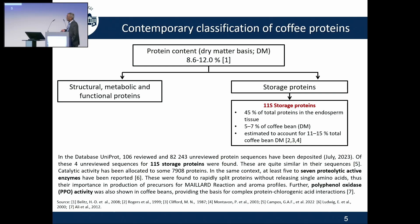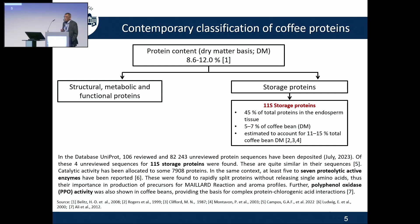If I looked up the Uniprot database, I find 82,000 proteins coming from coffee, and four amino acid sequences for the 11S storage protein. We tried to compare these 11S storage proteins and found they are very similar, so we concentrated on one of these. There are seven proteolytic active enzymes which can break down these proteins. Secondly, we have polyphenol oxidase, which can oxidize the chlorogenic acid and provides the basis for complex protein-chlorogenic interactions.